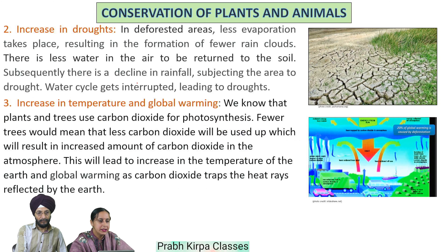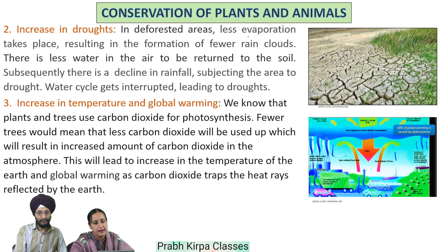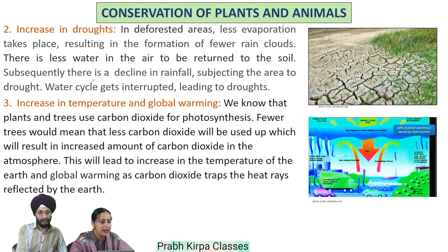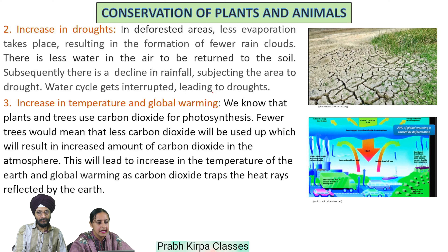Another consequence is an increase in droughts. In deforested areas, less evaporation takes place, resulting in the formation of fewer rain clouds. There is less water in the air to be returned to the soil, leading to a decline in rainfall and subjecting the area to drought. The water cycle gets interrupted, leading to droughts.